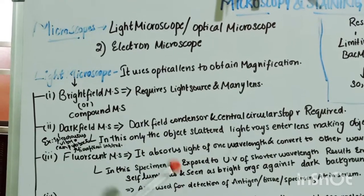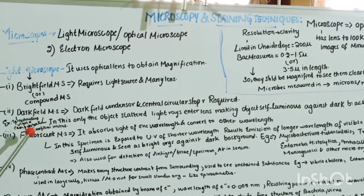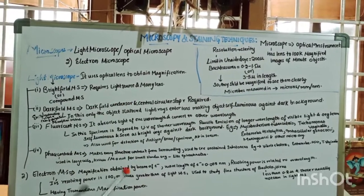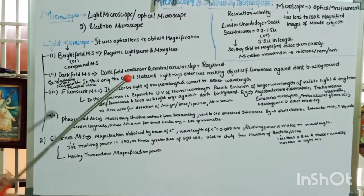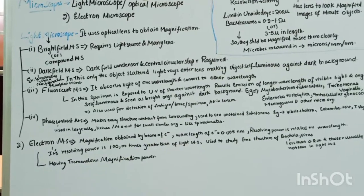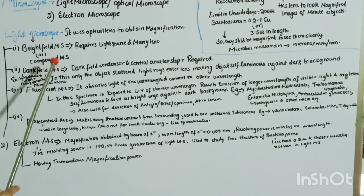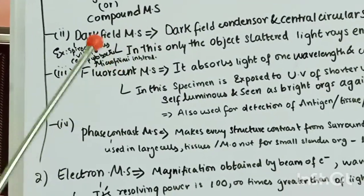The dark field microscope has a dark field condenser and a central circular stop. Only the object's scattered light rays enter the lens, making the object self-luminous. That means only the light scattered from the sides of the object reaches the objective lens. The object appears luminous against a dark background. Examples of organisms seen using dark field microscopy include spirochetes, Vibrio, Campylobacter, and microfilariae in blood.